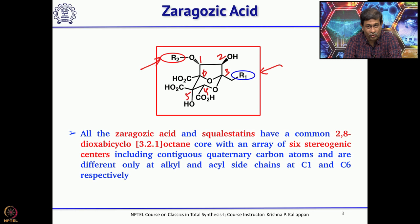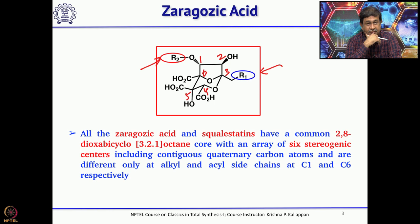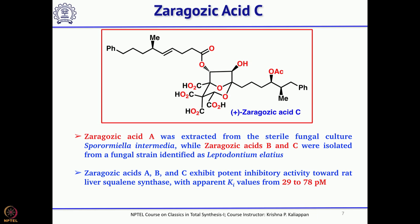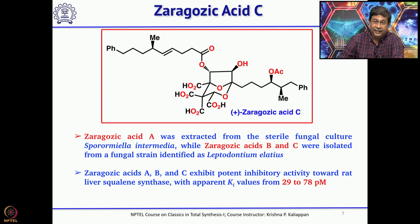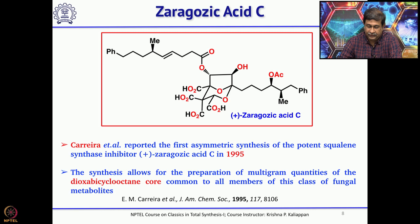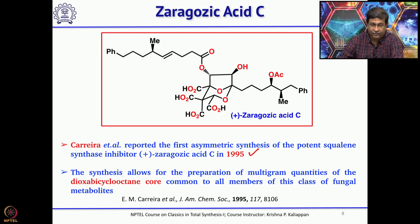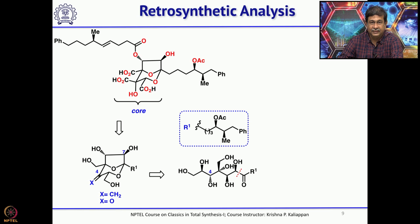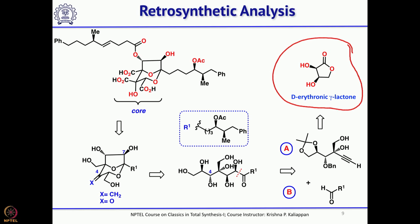It is not easy to synthesize such a complex molecule having 6 stereogenic centers and quaternary carbon atoms. Today we will talk about the total synthesis of xeragosic acid C reported by Eric Carrera's group. This was the first total synthesis, reported in 1995, using commercially available D-erythrolactone as the starting material in a Chiron approach based on retrosynthesis.